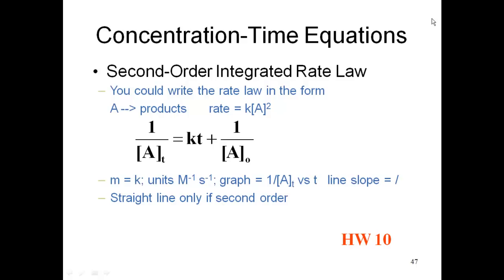Let's talk about the second order integrated rate equation. Same thing, simple expression of A going to products, which we know rate is equal to K[A]² is the rate law. Well, we're going to set that up as y equals mx plus b, and it comes to the following: one over the concentration of A_t is equal to K·t plus one over the concentration of A_0.